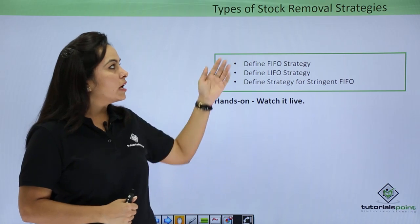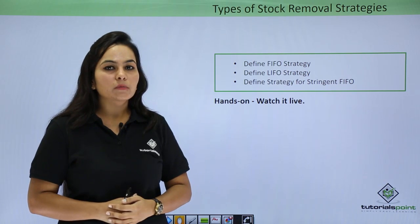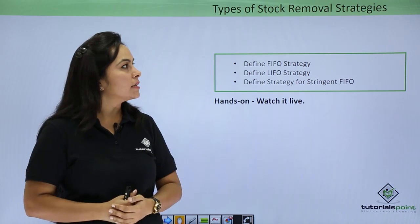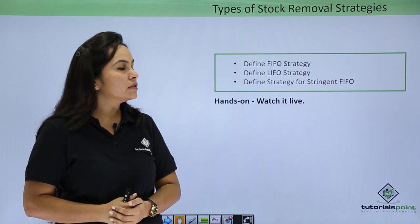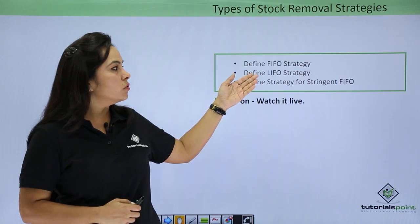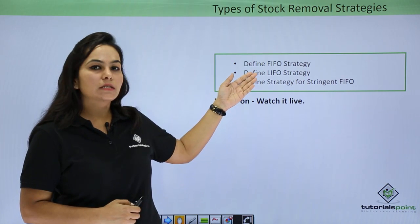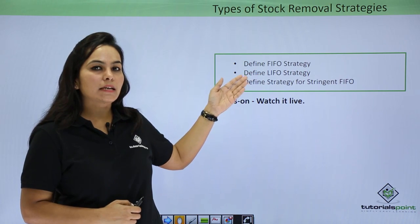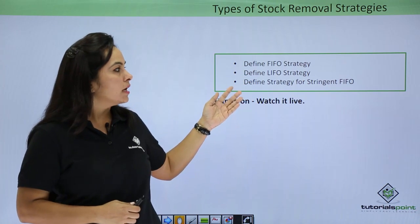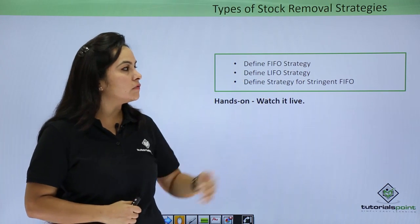Next we have types of stock removal strategies. We can define certain types: FIFO, that is first in first out; then LIFO, that is last in first out; and then stringent FIFO.